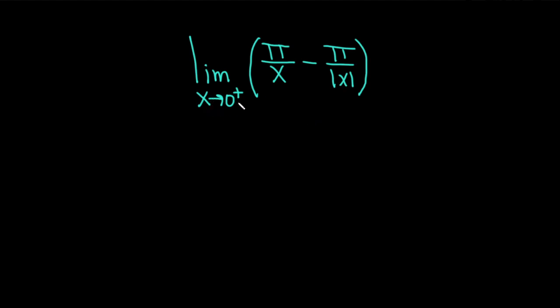The first thing you should do when evaluating limits is take the number and plug it in. If you do that, you get pi over 0 in both cases, so we can't really do that in this problem. Let's try something else.